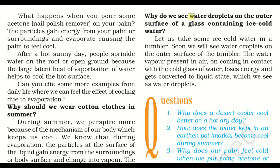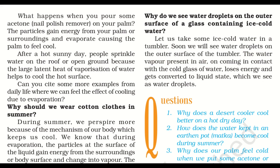We see water droplets on the outer surface of a glass containing ice-cold water. If we take some ice-cold water in a tumbler, soon we will see water droplets on the outer surface. The water vapor present in the air, on coming in contact with the cold glass, loses energy and gets converted to the liquid state, which we see as water droplets. These are some examples that show evaporation happening in our environment, and this evaporation helps to cool the temperature of the earth, making it sustainable for life.